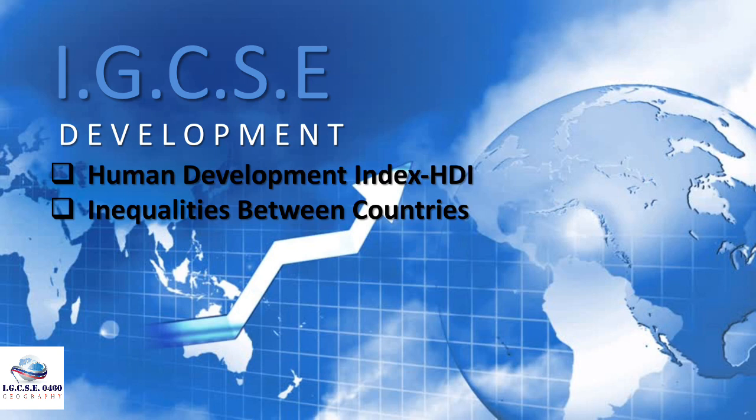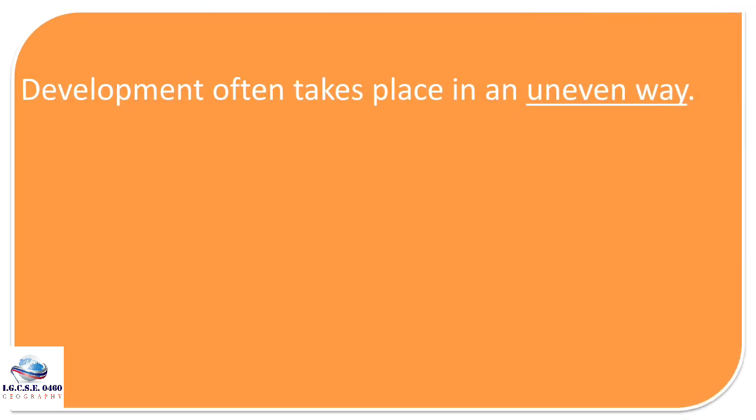In the previous lesson we looked at indicators of development like national income or wealth, life expectancy, literacy, and infant mortality rate, where a country's level of development is based on one of these indicators. But we know that development often takes place in an uneven way. For example, a country may have a very high GDP — probably derived from exploitation of rich oil reserves — while a segment of the population live in poverty and lack access to basic education, healthcare, or even decent housing.